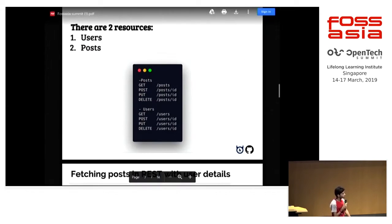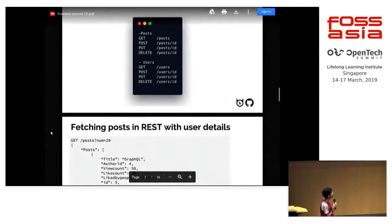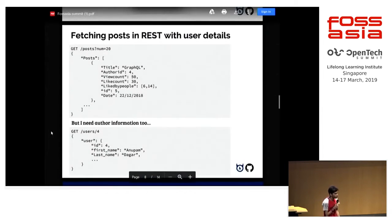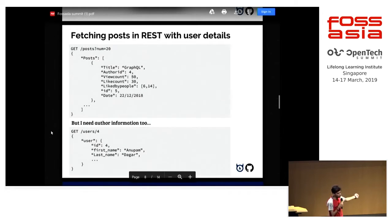Here are two resources: users and posts. Users is one database and posts is another database, and both are linked together with a foreign key. You do one query to get the post, you get the user ID inside it, and if you want to show the user's details you do another request with the user ID to get them.